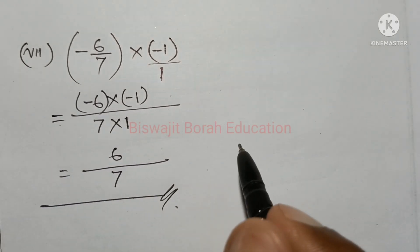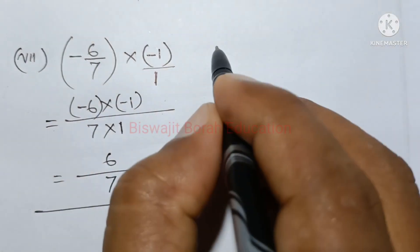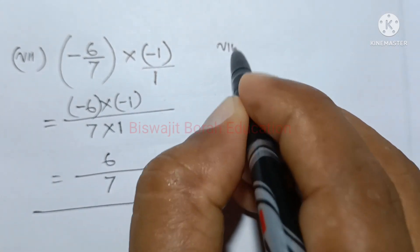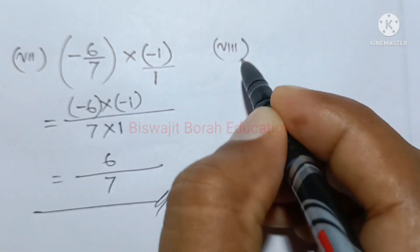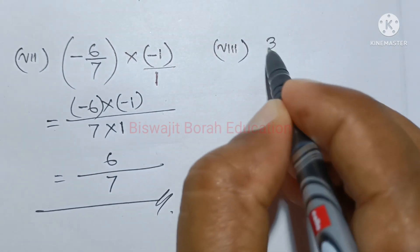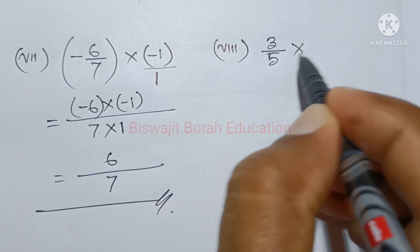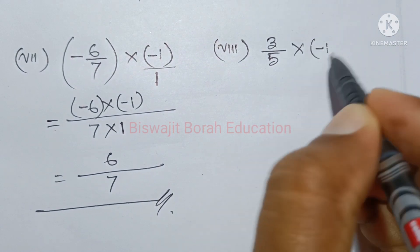Next, the last one to multiply — the 8th number. The 8th number multiplied is 3 by 5 into minus 1.